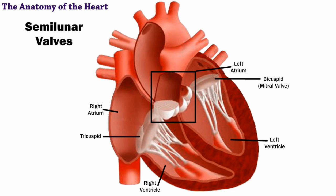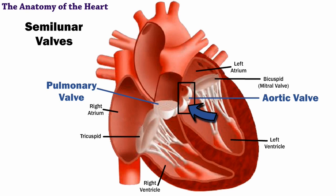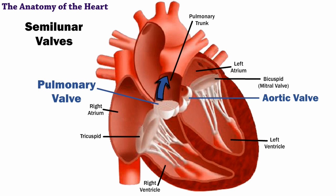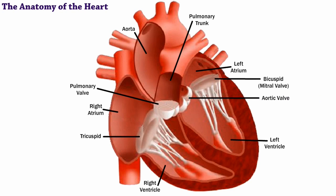There are also two semilunar valves: the pulmonary and the aortic. The pulmonary is between the right ventricle and the pulmonary trunk, and the aortic is between the left ventricle and the aorta.